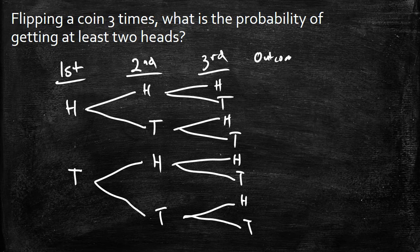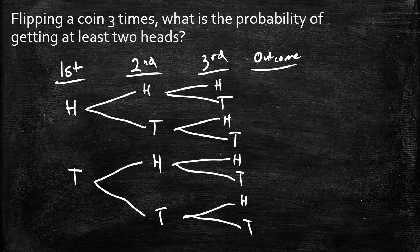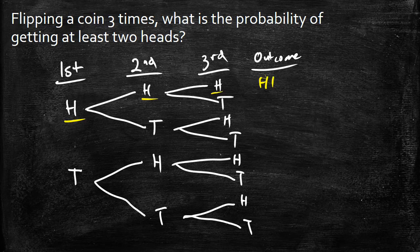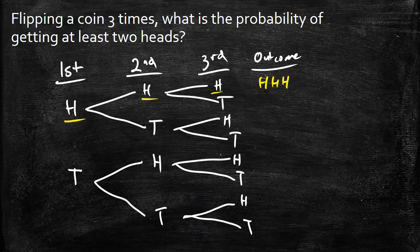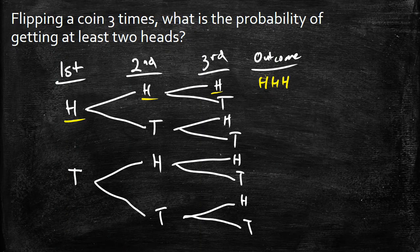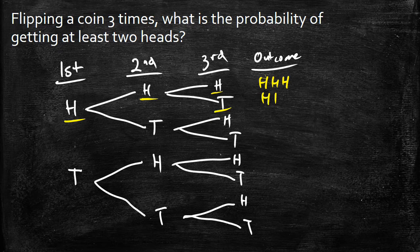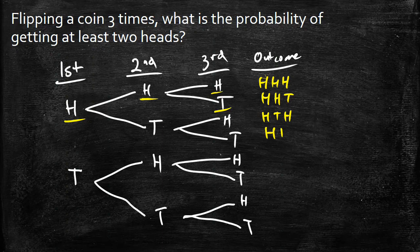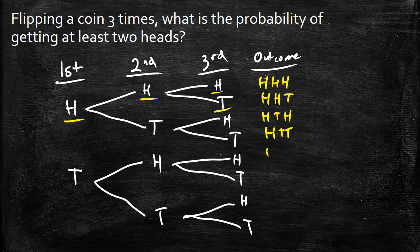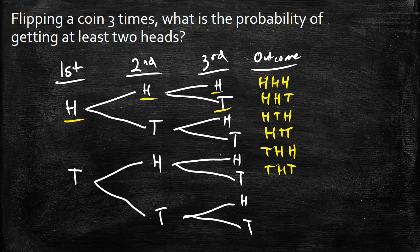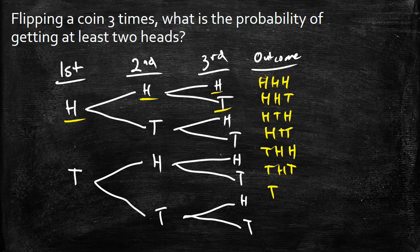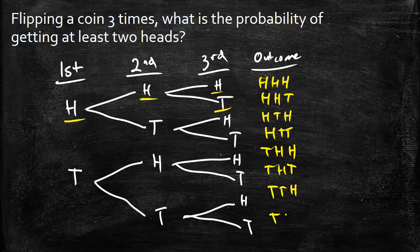So our outcome here, based off of our three flips, if we take a look at this, this one we'd have a head, a head, and a head. So our outcome is HHH. It's easier just to use abbreviations for these. Our second one would be HHT. And we can keep going down the list here. HTH, HTT, THH, THT, TTH, and TTT.